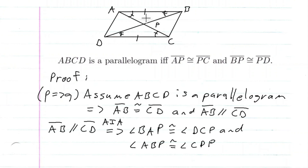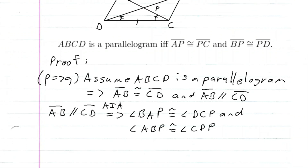Looking at these two triangles, we can see they are congruent by the Angle-Side-Angle congruency postulate. If these two triangles are congruent, then the corresponding sides are congruent, meaning AP is congruent to PC and BP is congruent to PD, showing that the diagonals bisect each other.